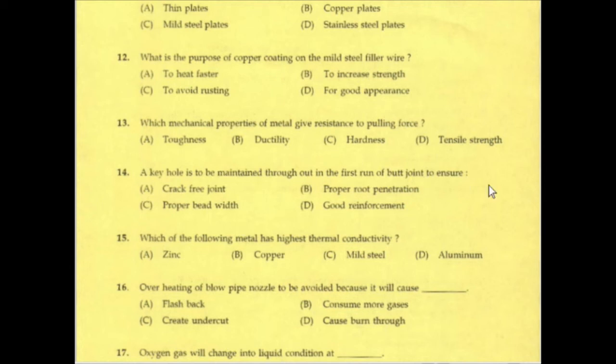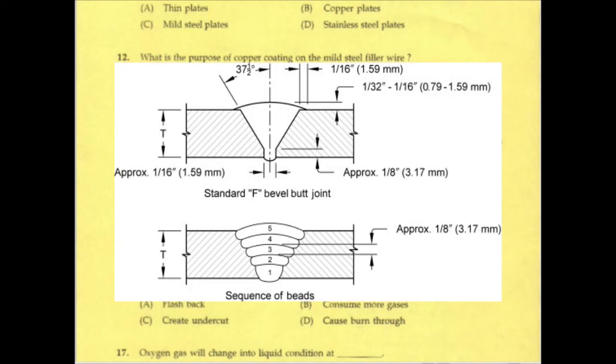A keyhole is to be maintained throughout the first run of a butt joint to ensure proper root penetration.